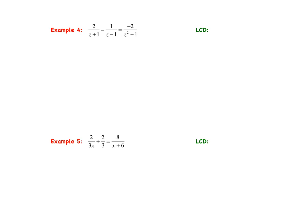This next one: 2 over z plus 1, minus 1 over z minus 1, equals negative 2 over z squared minus 1. First, make sure every denominator is factored. We should factor z squared minus 1 as a difference of squares: z plus 1 times z minus 1. Rewriting the equation: 2 over z plus 1, minus 1 over z minus 1, equals negative 2 over z plus 1 times z minus 1.